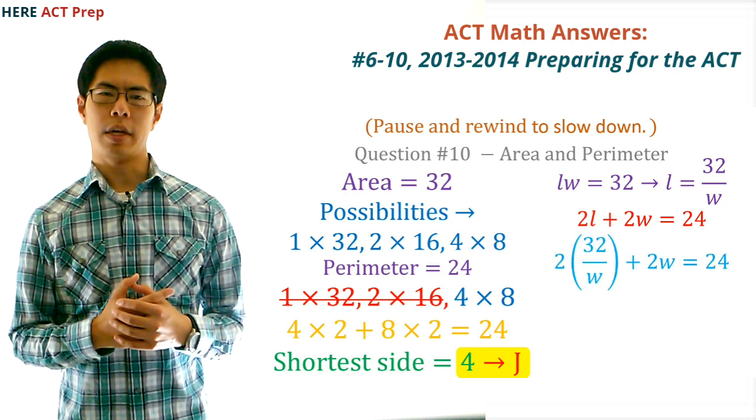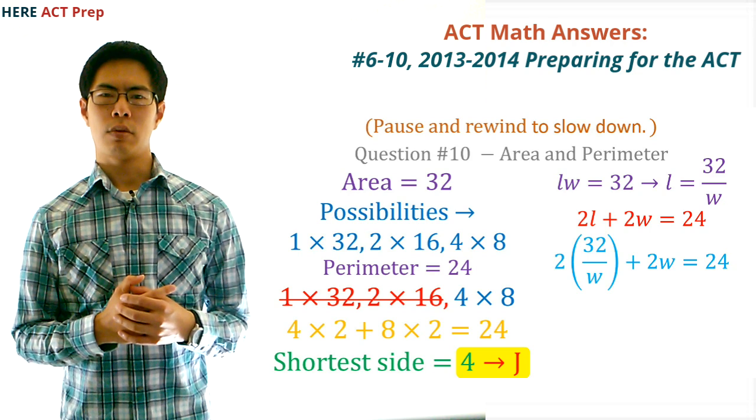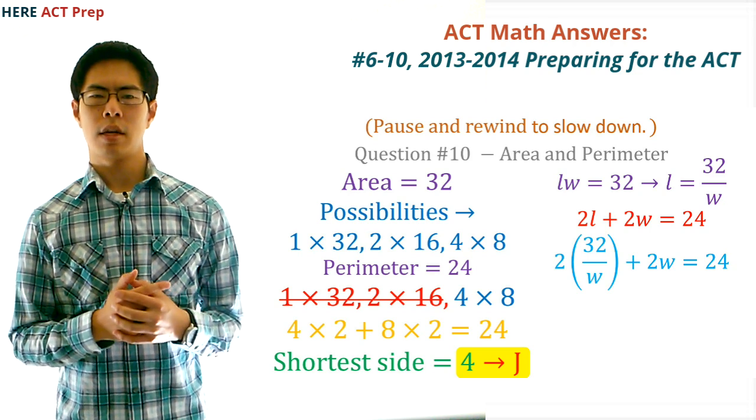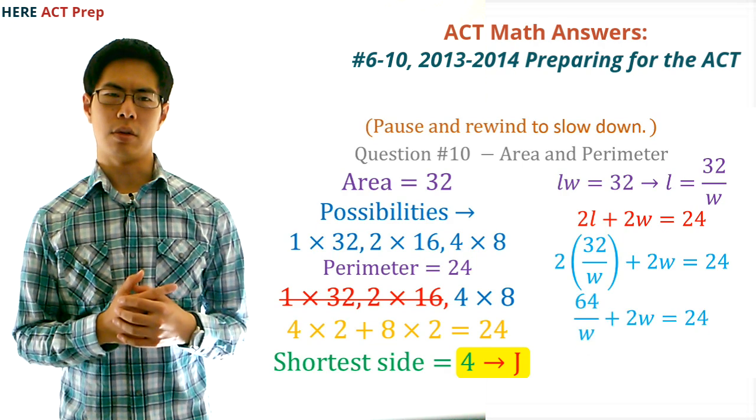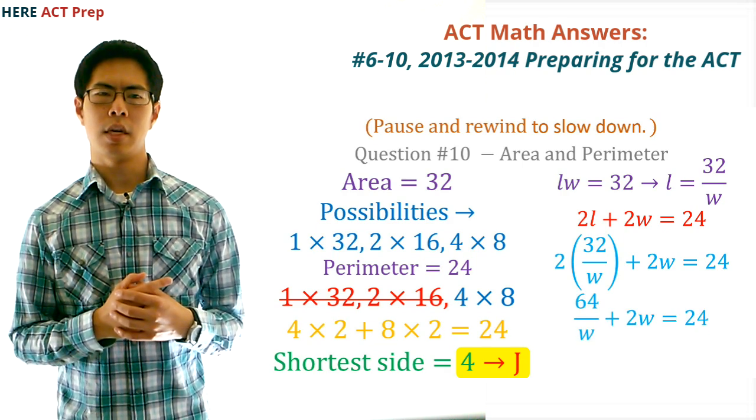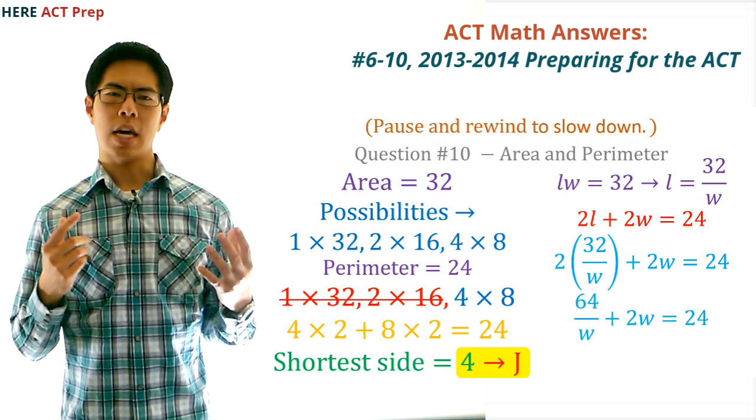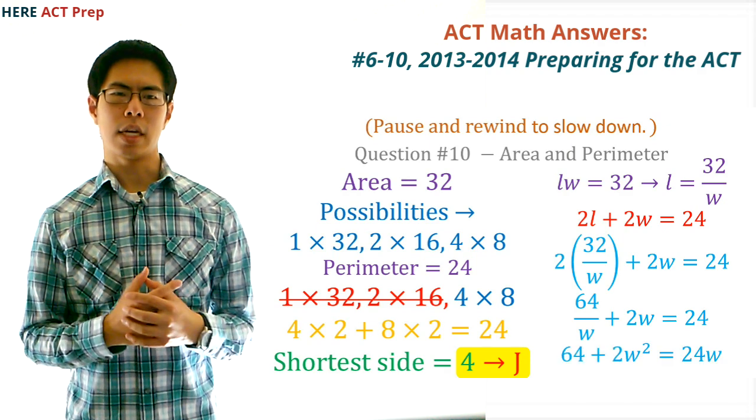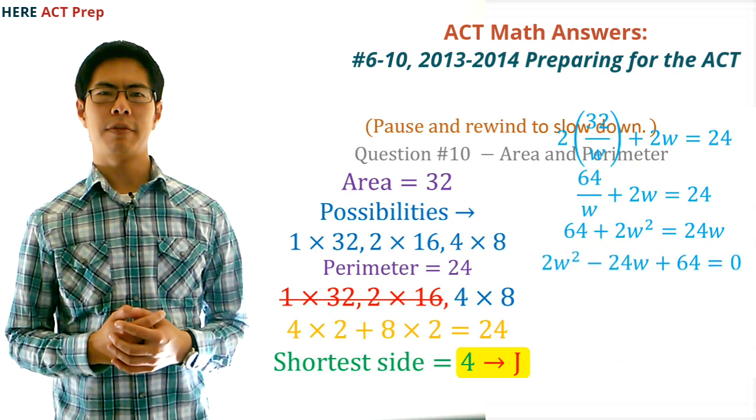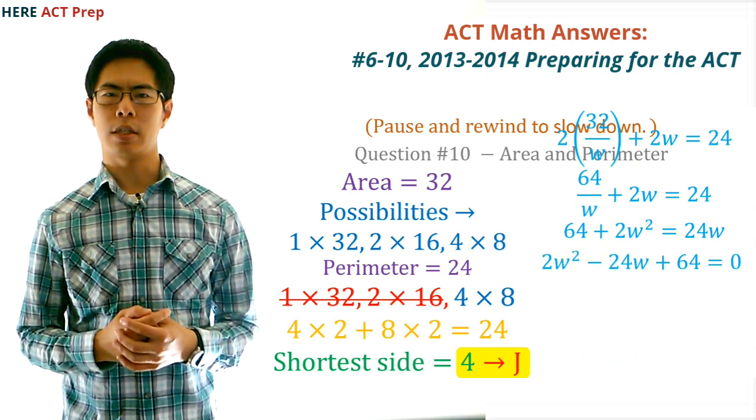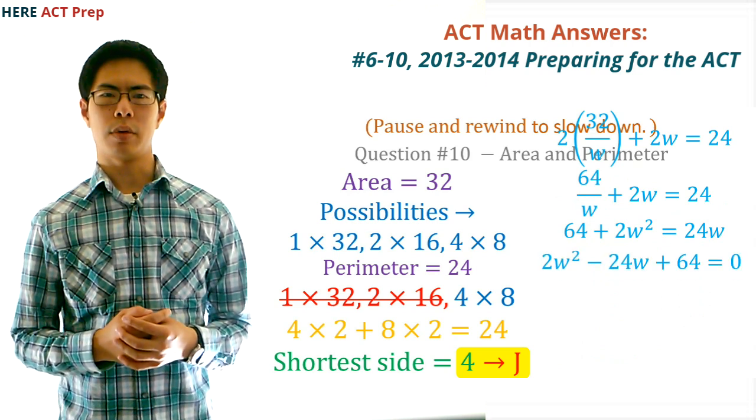Then, you would plug 32 over w into the l of the second equation, which would end up being 2 times 32 over w plus 2w equals 24, which simplifies to 64 over w plus 2w equals 24. After we multiply everything by w, we get 64 plus 2w squared equals 24w. We'll then subtract 24w from both sides to get 2w squared minus 24w plus 64 equals zero.